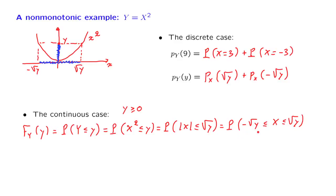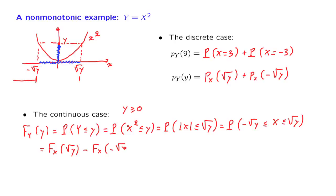In terms of a picture, the random variable Y takes a value less than or equal to little y if and only if x falls inside this range. Now we want to express this probability in terms of the CDF of x. The probability of this interval is equal to the probability that x is less than or equal to the square root of y — the CDF from minus infinity up to square root of y — minus the probability of the lower interval, which is the CDF of x up to the point negative square root of y. So we now have an expression for the CDF of y in terms of the CDF of x.